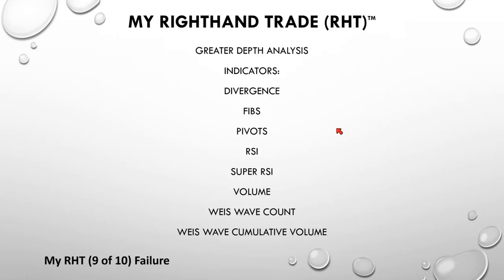Here are some indicators that are important to know about and really study. Fibonacci — that guy was a genius. He lived between 1180 and 1250.